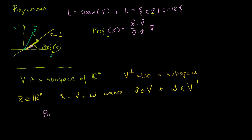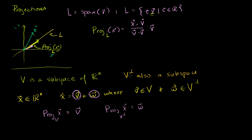Given that decomposition, we can define the projection of x onto the subspace V as being equal to just the part of x that came from V — it's equal to that vector v. Alternately, the projection of x onto the orthogonal complement of V is going to be equal to w. So this piece is a projection onto the subspace V, and this piece is a projection onto the orthogonal complement of V. What I want to show in this video is that this definition is equivalent to what we learned before when the subspace V is a line.